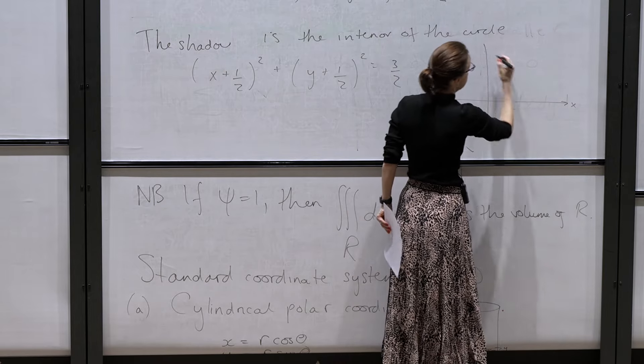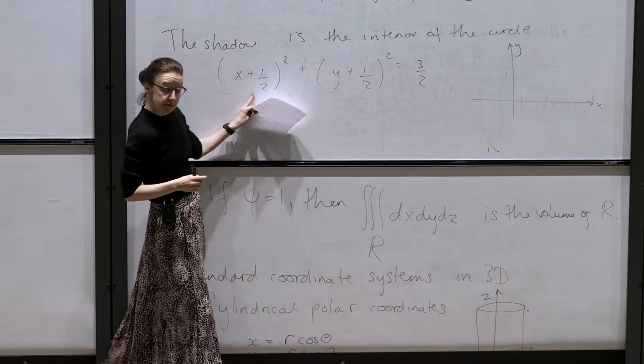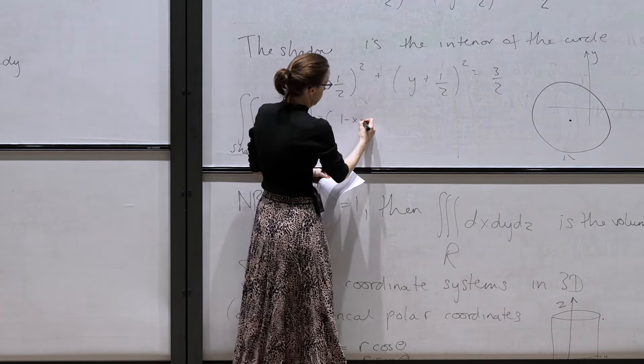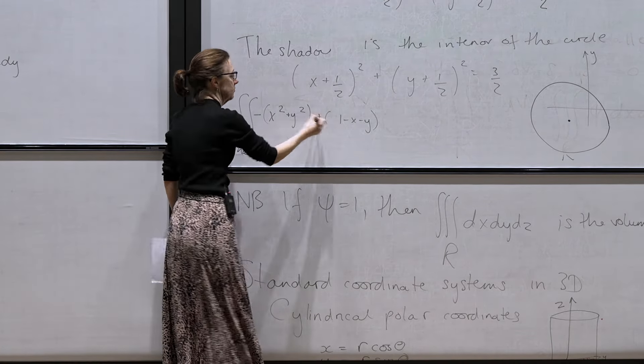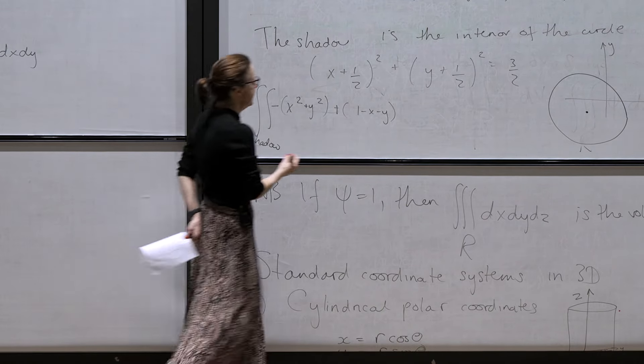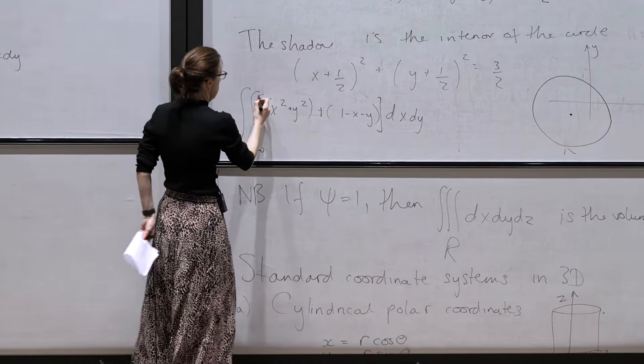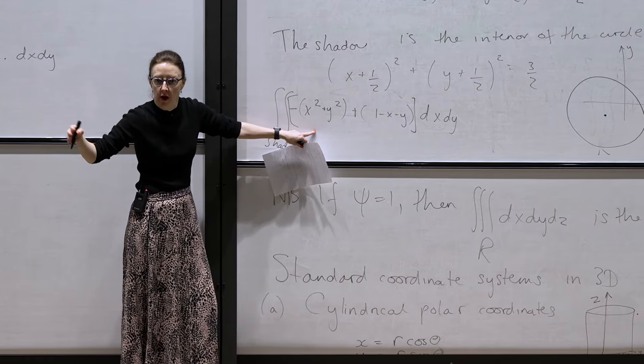In the xy-plane, the centre of the circle is x = -1/2, y = -1/2 — somewhere down here — and it has radius √(3/2). What I need to do is integrate over the shadow the distance between the top and bottom surfaces in z. So that becomes: the integral over the shadow of (1 - x - y) - (x² + y²) dx dy — the top minus the bottom gives the height of each sliver, and you add them all up to get the volume.